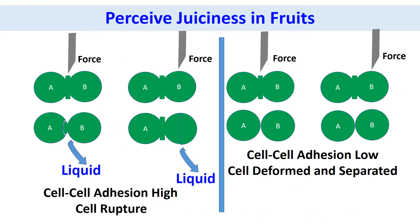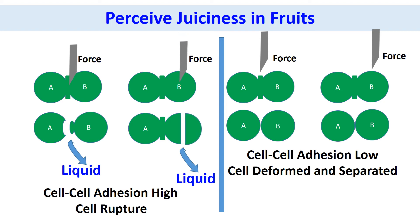In this slide I have shown cell rupture and separation for a clear understanding. In the first case, cells are ruptured due to strong cell-to-cell adhesion. In the second case, cells are separated due to low cell-to-cell adhesion.